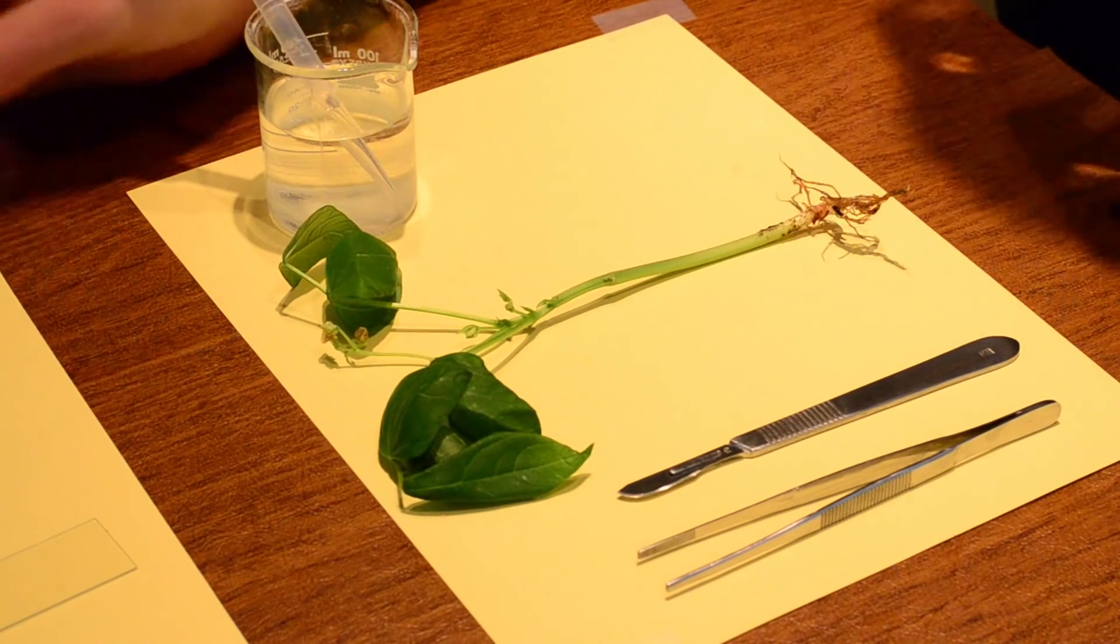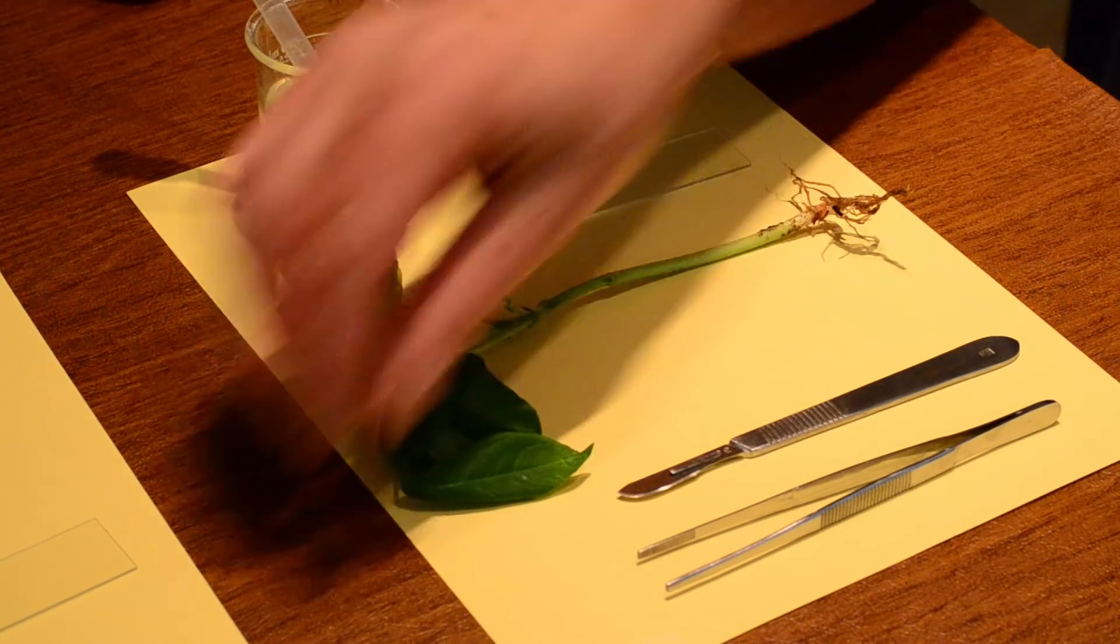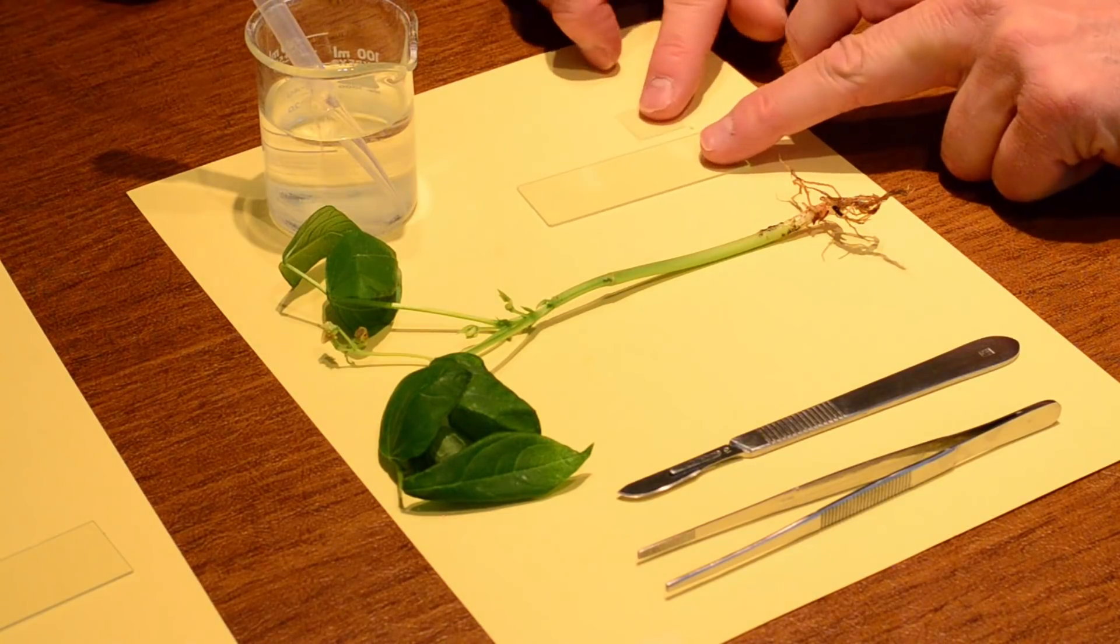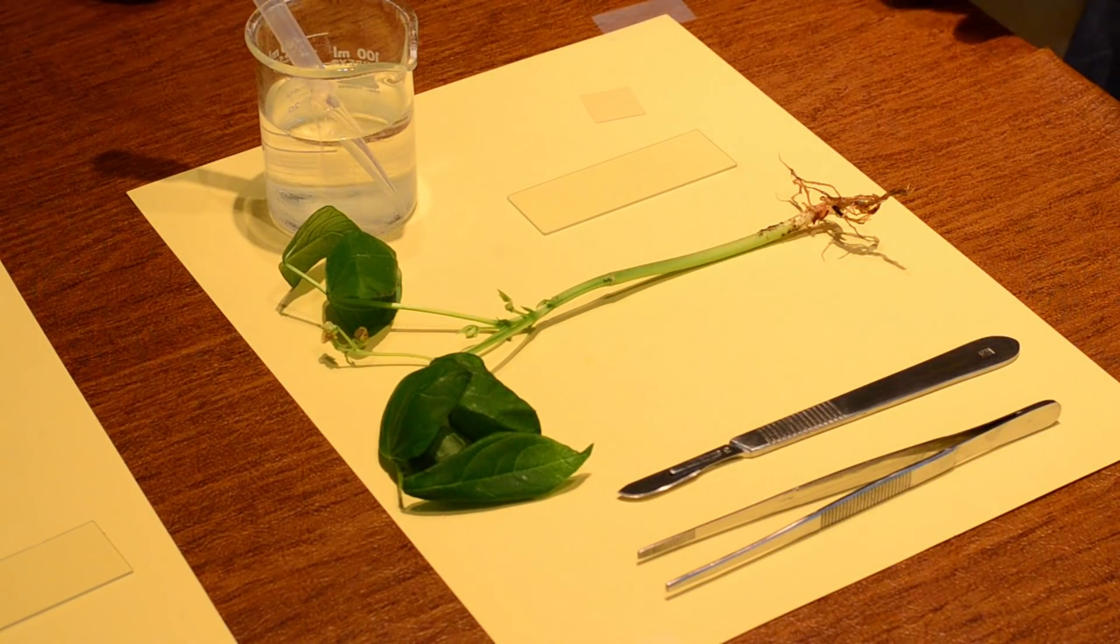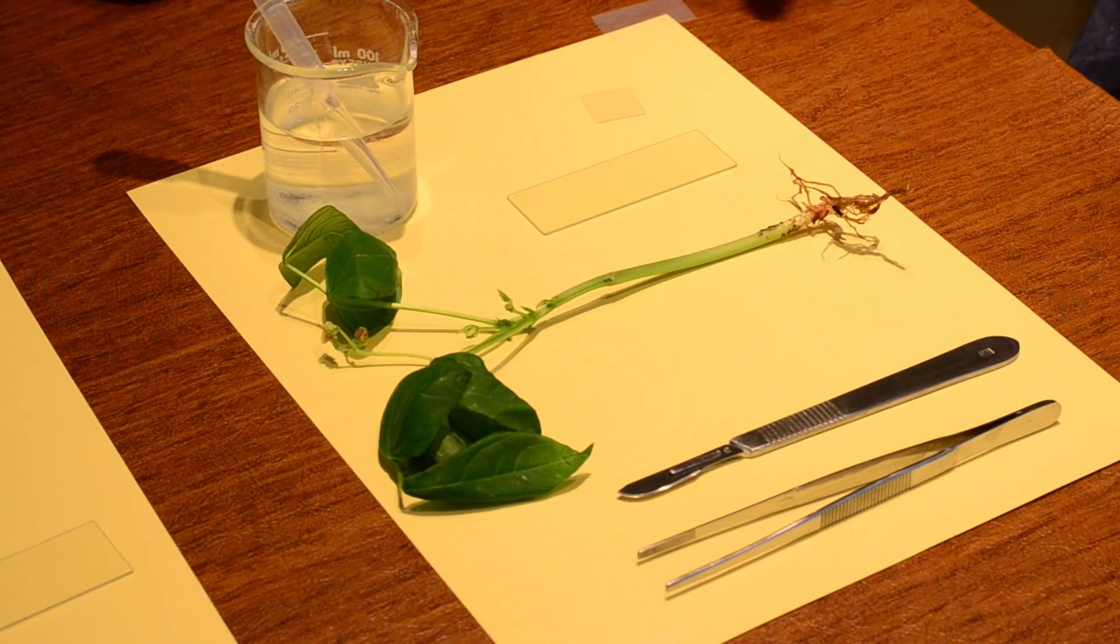And of course, we're going to have a slide and we're going to have a cover slip. So these are the things that we'll need. Alright, so first, let's go ahead and do a cross section of the stem.